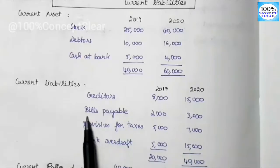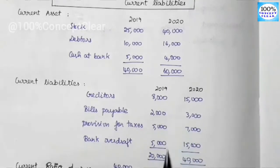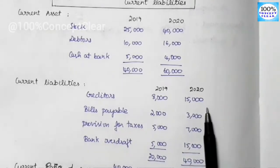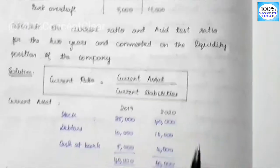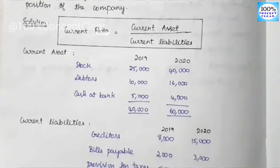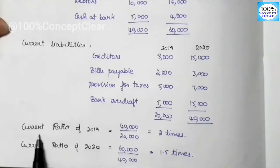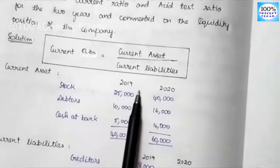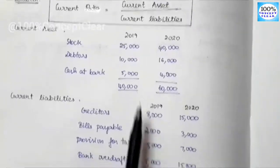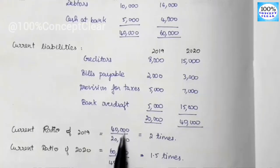Now we can substitute these amounts into the formula. Current ratio of 2019 = Current Assets ÷ Current Liabilities = 40,000 ÷ 20,000 = 2 times. So the current ratio for 2019 is 2 times.